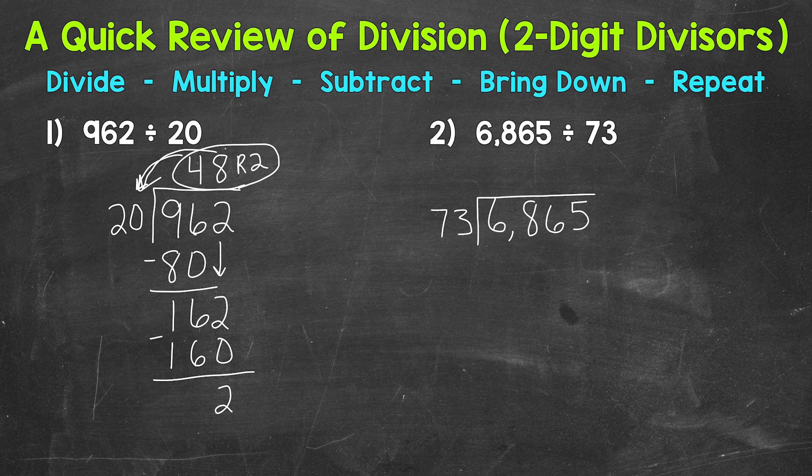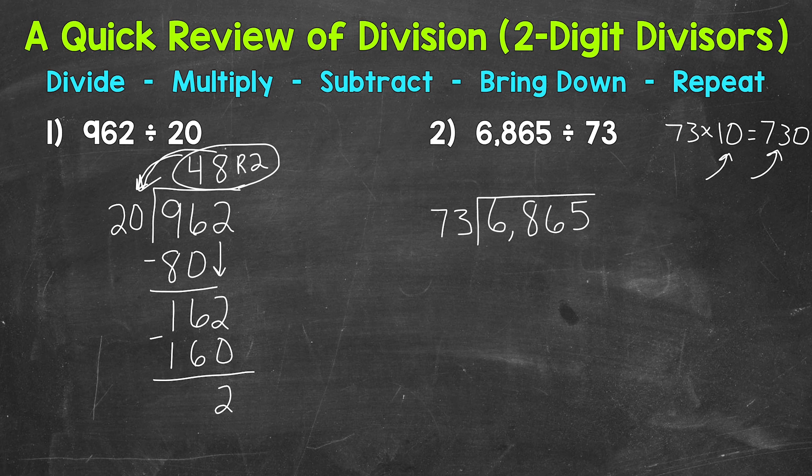Now in order to figure out how many whole groups of 73 are in 686, we need to estimate and check. Now I always like to use something I know as a reference point, something to go off of in order to make better estimates. So for example, I always like to start with 10. So 73 times 10 is 730. Now we can go off of that because we have 686, which is kind of close to 730. So our estimate should be close to 10 groups of 73. So let's try 9. So I'm going to come to the side and do 73 times 9 to see where 9 groups of 73 gets us.